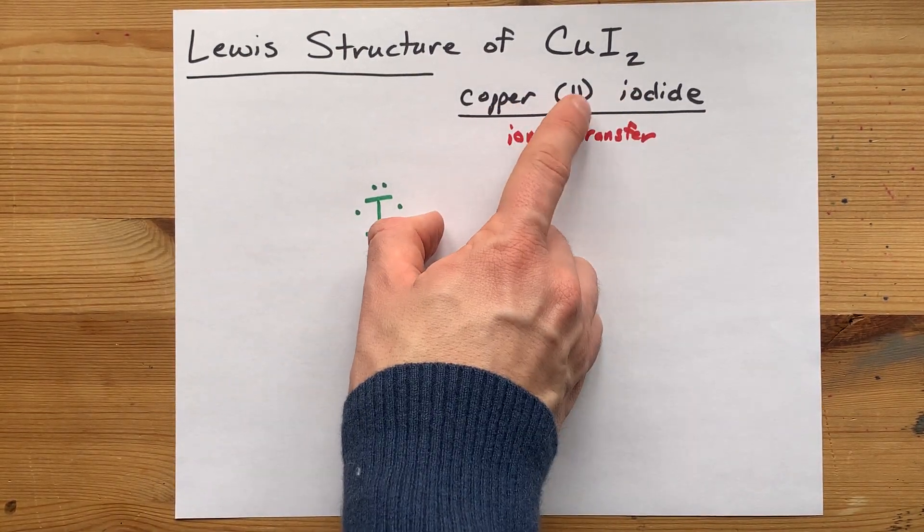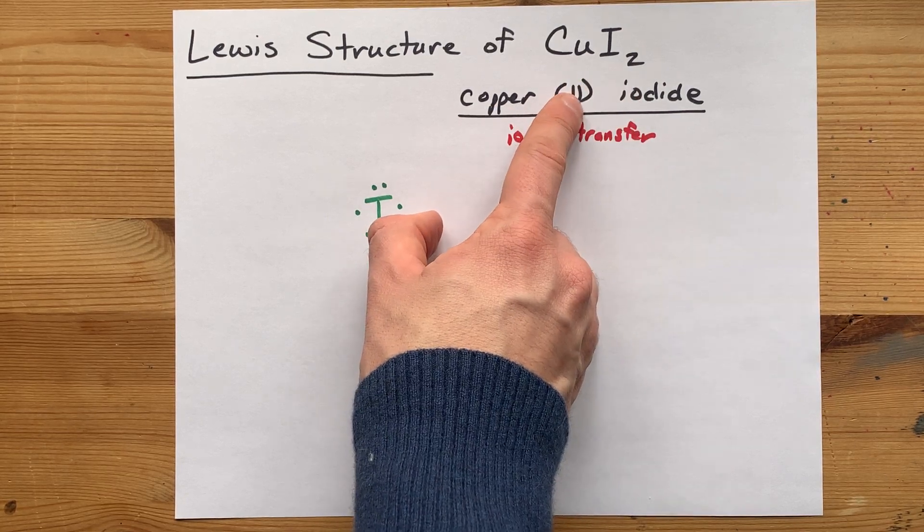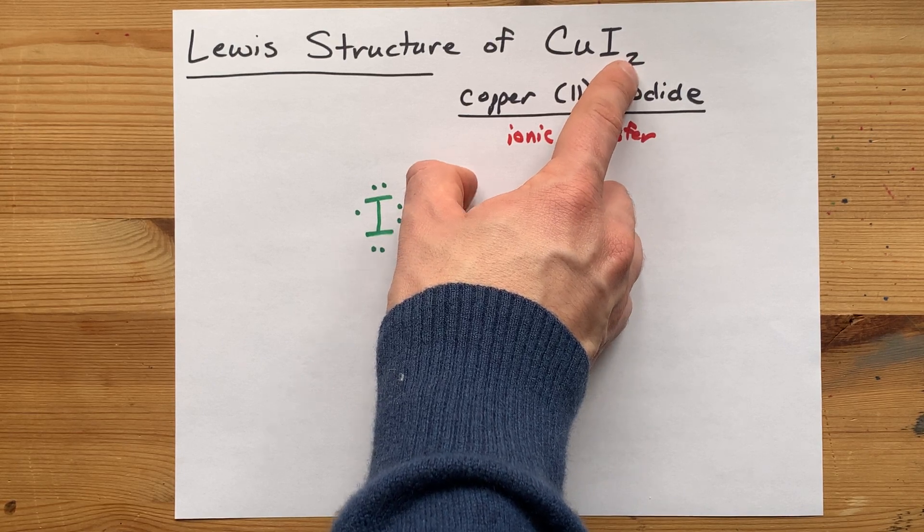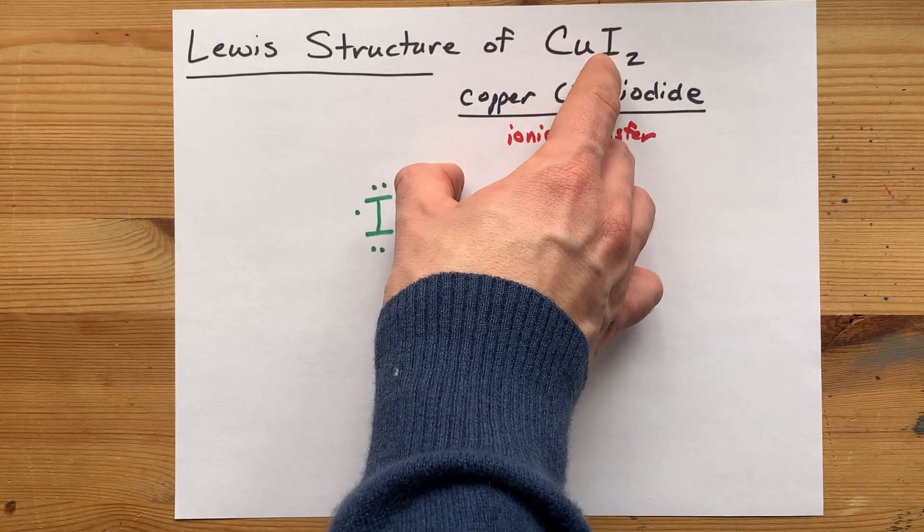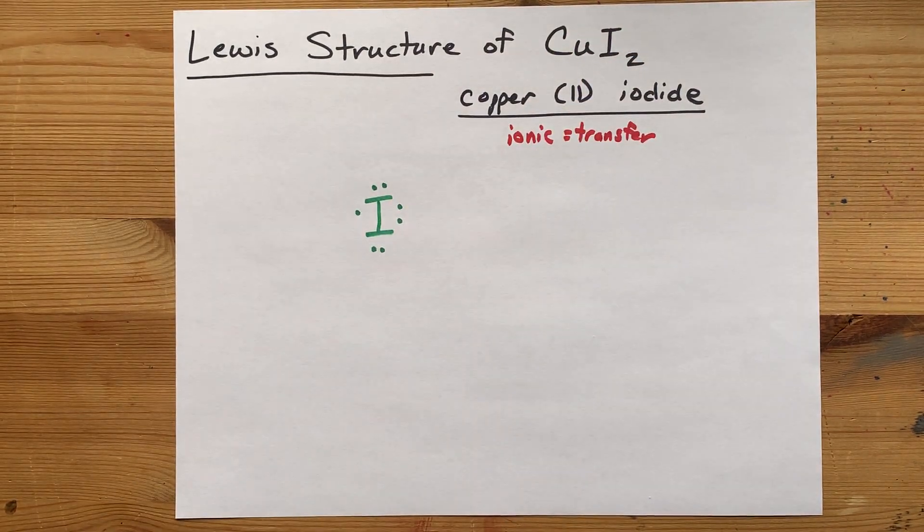If you're given the name, it says it right there: copper(II) iodide, charge is two. But it's also here in the formula with this two on iodide. If copper brings a charge of +2 and iodine brings a charge of -1, they crisscross to give you CuI2.